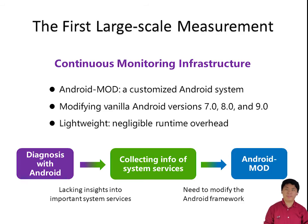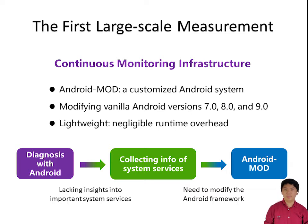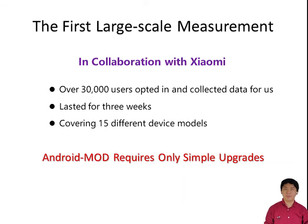To bridge the gap, we carry out the first large-scale measurement study of ANR and SNR in the wild. We first build a continuous monitoring infrastructure based on a customized Android system called Android Mode. Android Mode provides in-situ visibility into system data that the vanilla version cannot provide, such as information of critical system services, while adding negligible runtime overhead. It covers three major Android versions from 7.0 to 9.0. We invited active users in Xiaomi's smartphone community to participate by simply upgrading their systems to Android Mode. For three weeks, over 30,000 users opted in and collected data for us, involving 15 different models of Android phones.